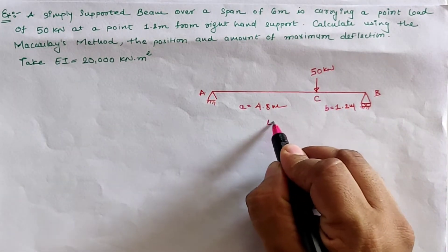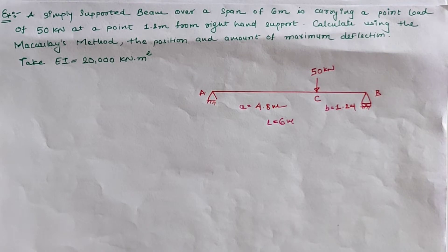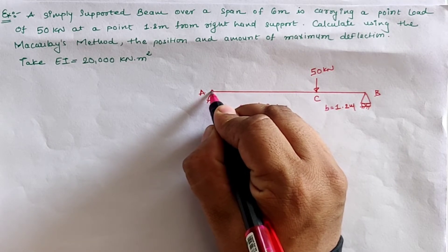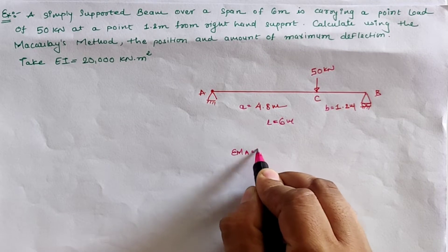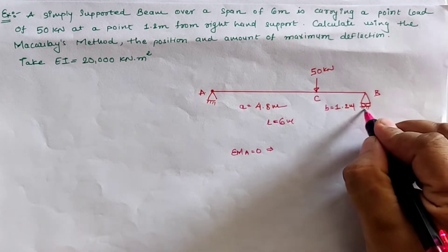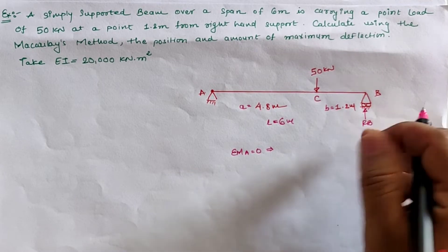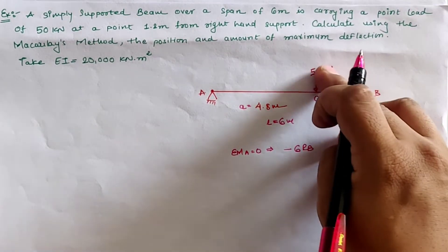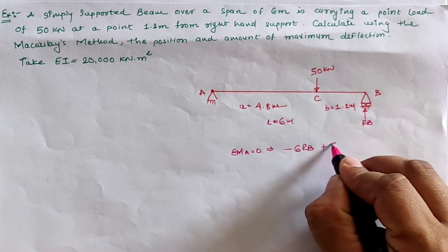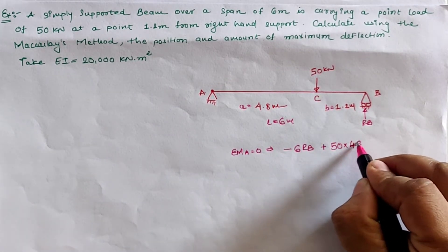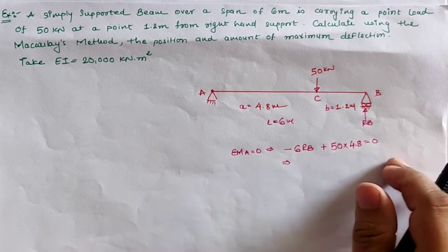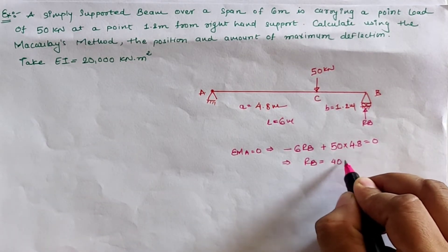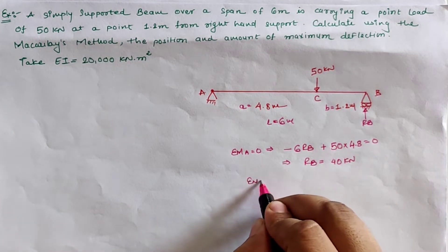First we have to find out the support reactions. Taking sigma M at location A equal to zero: the support reaction at B (R_B) creates an anti-clockwise moment at A, giving minus 6·R_B, and the 50 kilo Newton load creates a clockwise moment, giving positive 50 into 4.8, equal to zero. Solving this, R_B equals 40 kilo Newton.